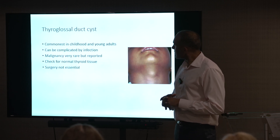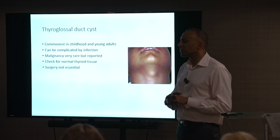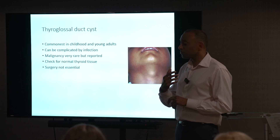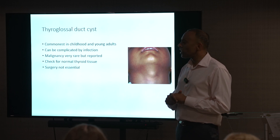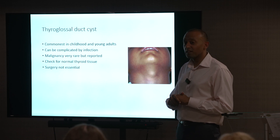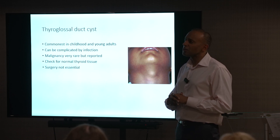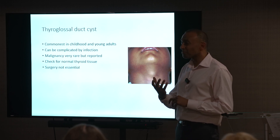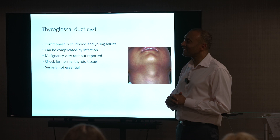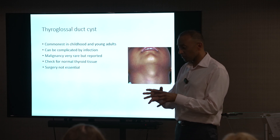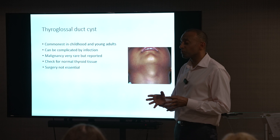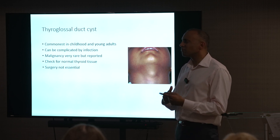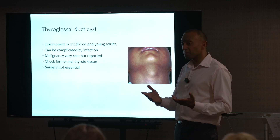Thyroglossal duct cysts are embryological remnants along the thyroglossal tract. They usually present in younger patients but can present at any age. You tend to see a lump that moves on swallowing and tongue protrusion. When you do an ultrasound scan, apart from looking at the lump, you want to ensure that they've got a normal thyroid as well. Surgery is often offered, particularly if there's a recurrent infection, but can be managed conservatively also.